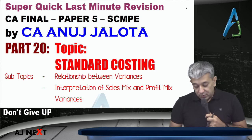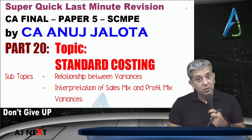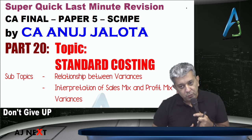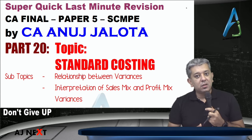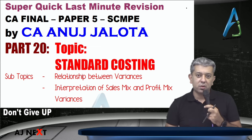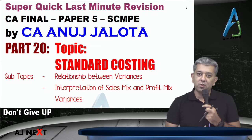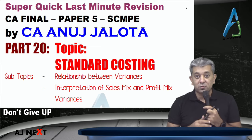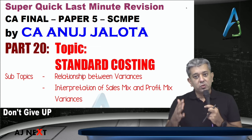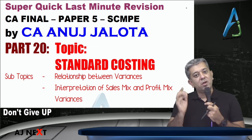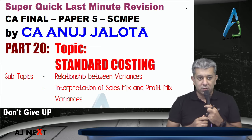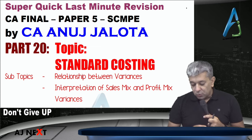Hi guys, we are still continuing with the standard costing super quick revision. We have done material, labor, variable factory overheads, fixed factory overheads, sales variances, and profit variances. Fixed overheads and profit variances we have done under both absorption costing and marginal costing. So what next?